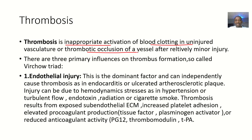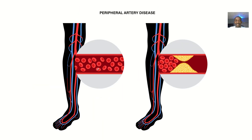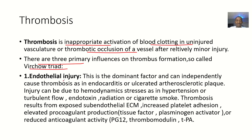Thrombotic occlusion of a vessel can occur after a relatively minor injury — there's a minor injury that doesn't really warrant the activation that actually occurs, but the activation is too much compared to the injury. So the formation of thrombosis is where Virchow's triad actually comes from. There are three primary influences on thrombosis formation — that's the so-called Virchow's triad — three things that influence the formation of thrombosis.